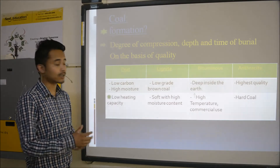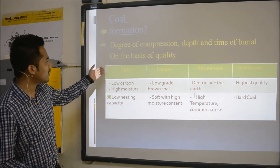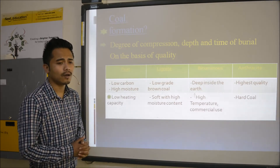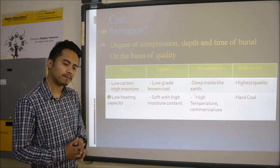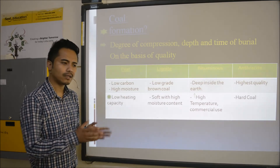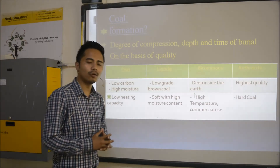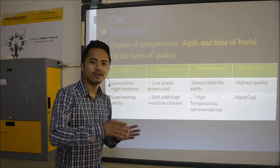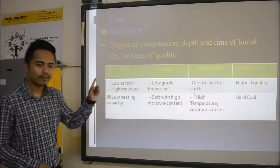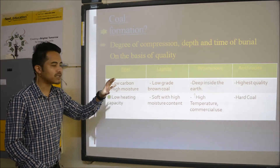Coal can also be categorized on the basis of age into two types: number one is Gondwana coal and number two is Tertiary coal. Gondwana coal is the coal which originated from around 200 million years ago, and Tertiary coal originated from around 55 million years ago. So coal is categorized on the basis of quality and on the basis of age.